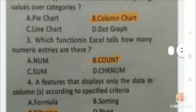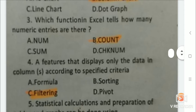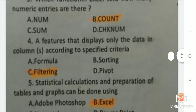Next question: A feature that displays only the data in a column according to specified criteria. Answer is filtering. Next question: Statistical calculations and preparation of tables and graphs can be done using? Answer is Excel.